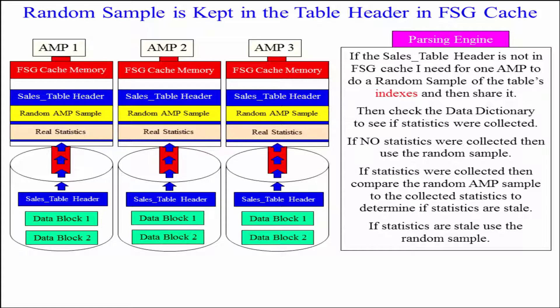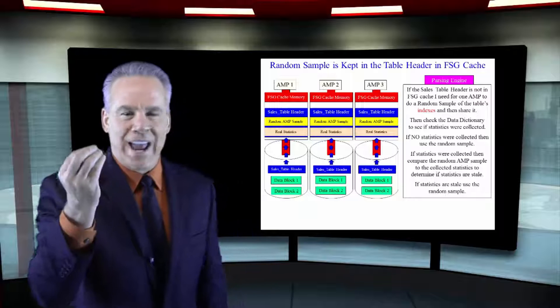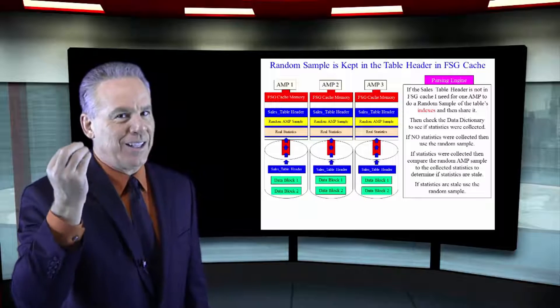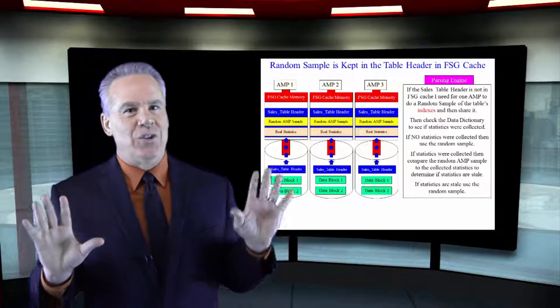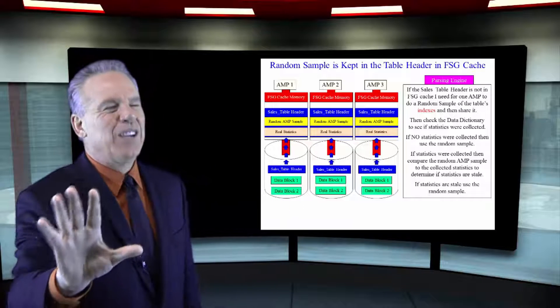The only time they have to do that random AMP sample again is any time they're bringing that header into memory the first time. That's when they're going to have to do it. As long as it's still in memory, they just use the sample that was collected a little while ago.